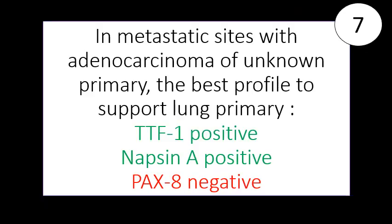For metastatic sites — lymph nodes, liver, brain, soft tissues, skin — when you have an adenocarcinoma and are wondering if it could be from the lung, the best starting point is radiological identification of a lung mass. But often you don't have that information, or there is also a mass at another site, making it unclear where the tumor is coming from.